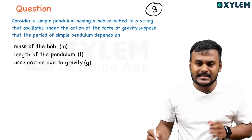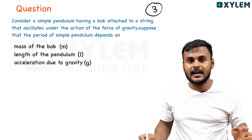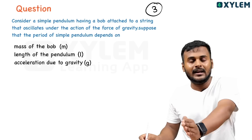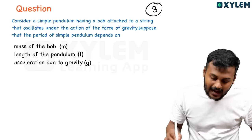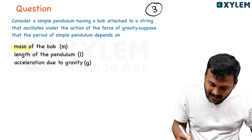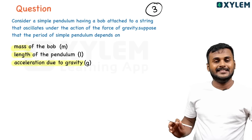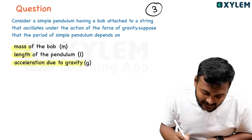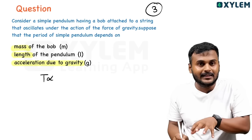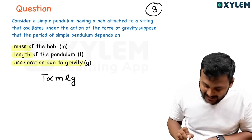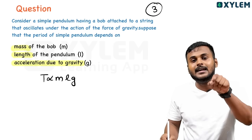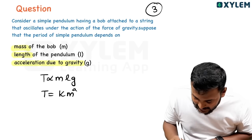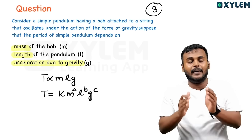Now, an equation is derived using dimensional analysis — two applications. The second one is the time period of a pendulum. The time period depends on mass, length, and acceleration due to gravity — three parameters. So T is proportional to M^a · L^b · g^c, and T = K · M^a · L^b · g^c.